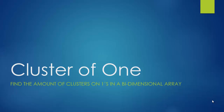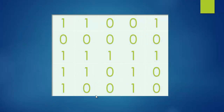Hey guys, it's Quinston, and today we're going to learn something very different: how to find the amount of clusters of ones in a bidimensional array consisting of ones and zeros. A cluster of ones means ones that are segregated together in one region of the array. This program takes the array, finds how many segregated clusters of ones exist, and in this example the output will be three.